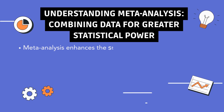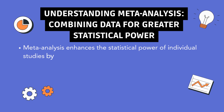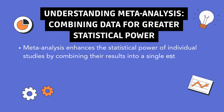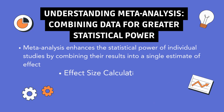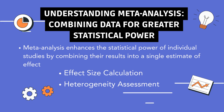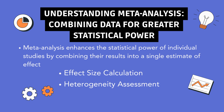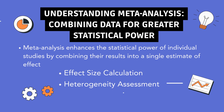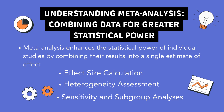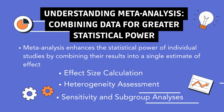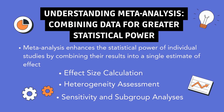Meta-analysis enhances the statistical power of individual studies by combining their results into a single estimate of effect. Effect size calculation: meta-analyses calculate an effect size for each study, e.g., odds ratio, risk ratio, and then pool these estimates to provide an overall measure of effect. Heterogeneity assessment: assessing heterogeneity — variability — among the included studies is critical for interpreting the results of a meta-analysis. Statistical methods like the I² statistic and Cochrane's Q test are used to quantify heterogeneity and determine whether it is appropriate to combine the study results. Sensitivity and subgroup analyses: sensitivity analyses are performed to test the robustness of the meta-analysis results, while subgroup analyses explore differences in effect size based on study characteristics, e.g., population and intervention.